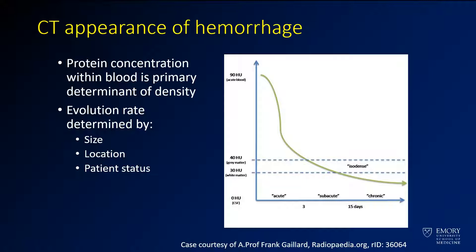How it's going to evolve will change with the size and location of the hemorrhage. When a patient is very ill, it may evolve at a different time. Here on the right, you have a graph from Radiopaedia which shows the time frame as this goes on. When you start out in a very acute phase, you have a very bright appearance, around 80 to 100 Hounsfield units.